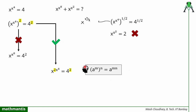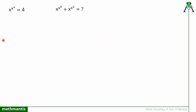This error comes from the property that power raised to power gets multiplied — the total power here is x raised to power 4. Now let's look at the correct solution. To solve this question, I will first substitute x raised to power 4 equal to t, so the question simplifies. We get x raised to power 4 equal to t, and the original equation becomes x raised to power t equal to 4. Now we have two exponential equations.